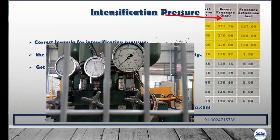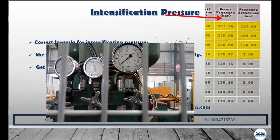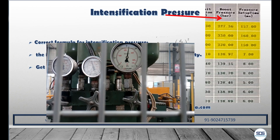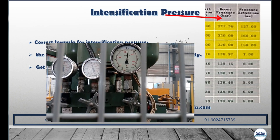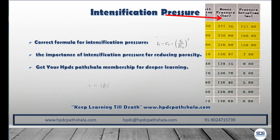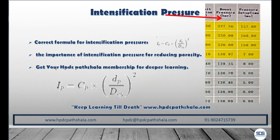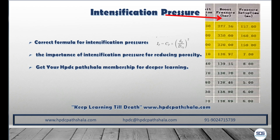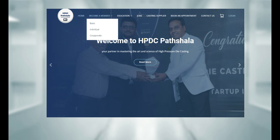Now let's discuss intensification pressure. This is the pressure applied after the cavity is filled to compact the molten metal, reducing porosity. The formula for intensification pressure: IP is the intensification pressure, CP is the casting pressure, DP is the plunger diameter, and DCY is the intensification cylinder diameter — also called the multiplier diameter. If you want to dive deeper into intensification pressure and other key die casting parameters, keep watching.